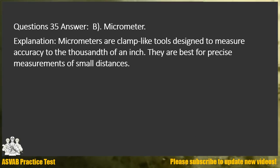Question 35. Answer B. Micrometer. Explanation: Micrometers are clamp-like tools designed to measure accuracy to the thousandth of an inch. They are best for precise measurements of small distances.